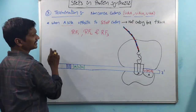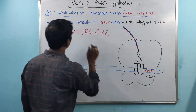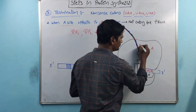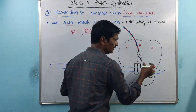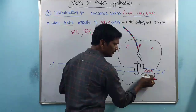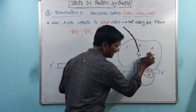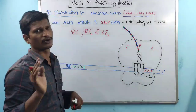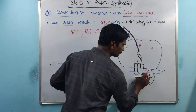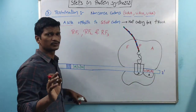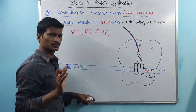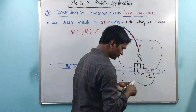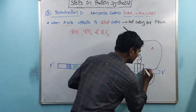When the A site is opposite to a stop codon — the A site, P site, and E site — this stop codon does not code for tRNA and does not code for an amino acid. Instead, it codes for the releasing factor. Normally tRNA is coded at the A site, but when a non-sense codon is opposite to the A site, it codes for the releasing factor.